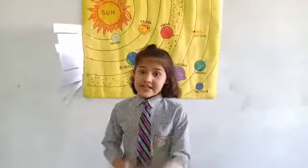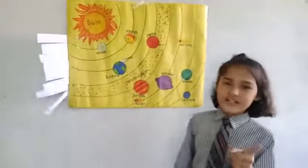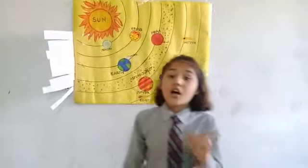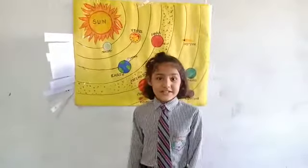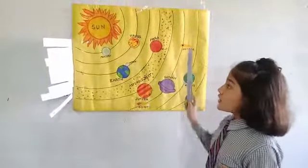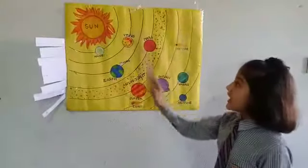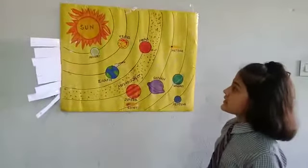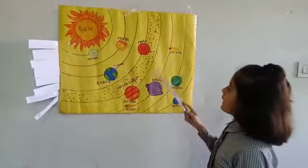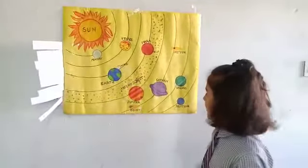The first question that will come to your mind is: what is the solar system? The solar system is a collection of the sun and various other objects like planets, stars, and more.